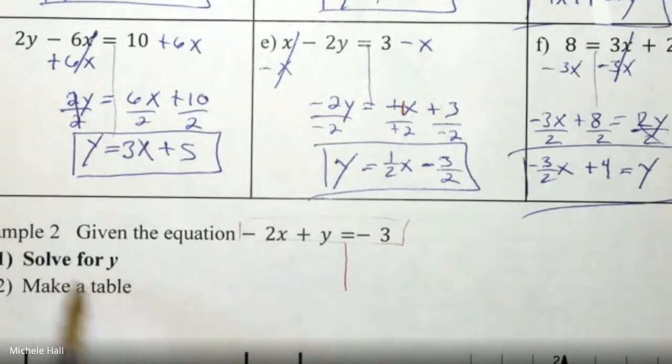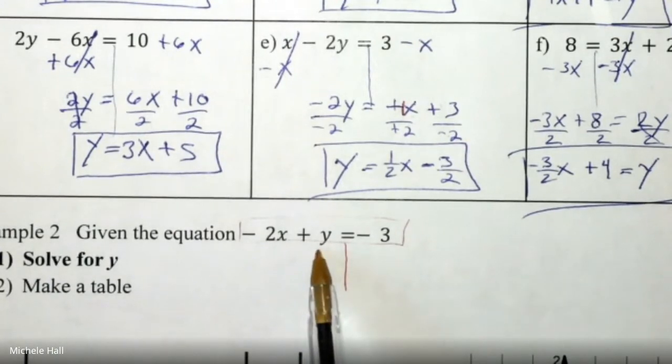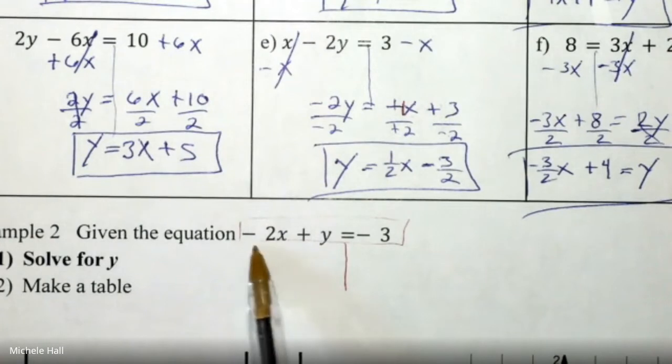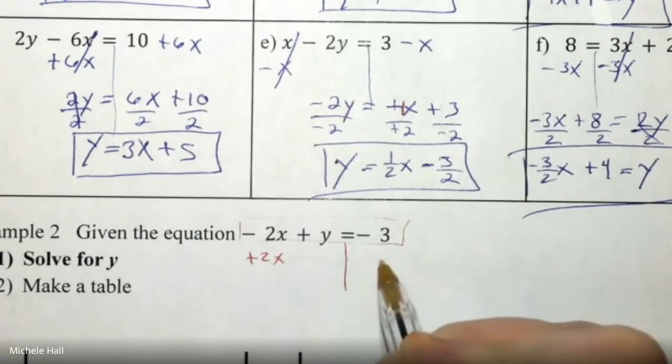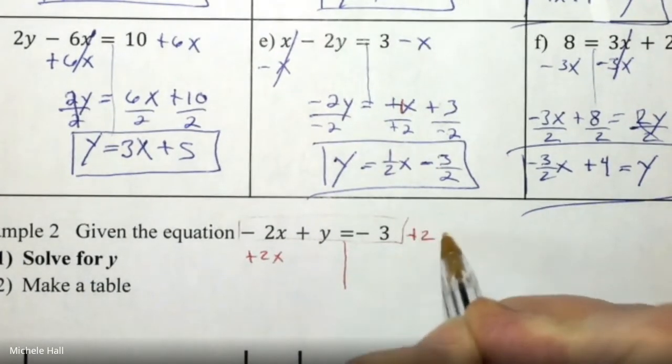Step one is to solve for Y and then make a table and then graph. How do I solve for Y? What's being done to the Y? It's being added by a negative 2X. What's the opposite of a negative 2X? So we're going to add 2X to this side. We're going to add 2X to this side.